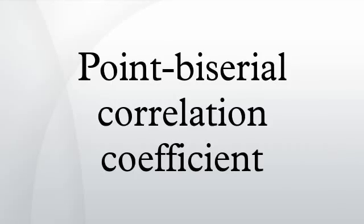The point-biserial correlation coefficient is a correlation coefficient used when one variable is dichotomous. Y can either be naturally dichotomous, like gender, or an artificially dichotomized variable.